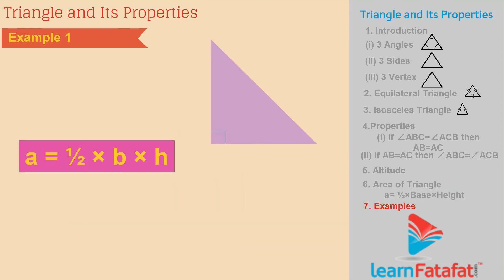Examples. Example 1. In the given figure, base is 2 cm and height is 4 cm. So area is half into 2 into 4. That is equal to 4 cm square.